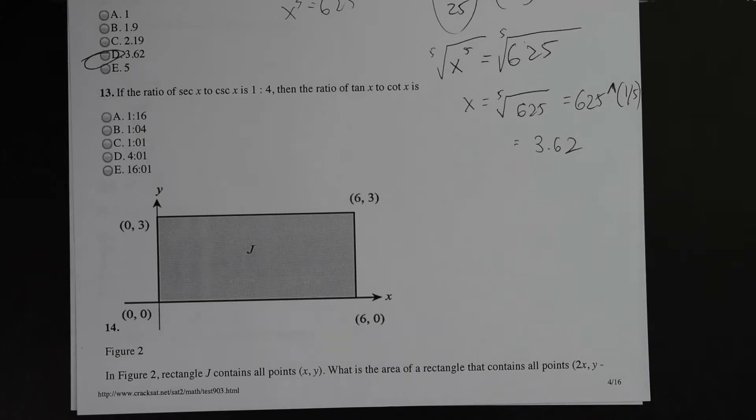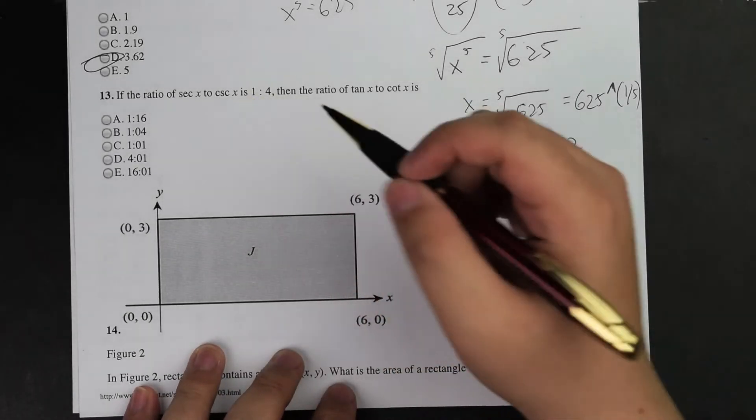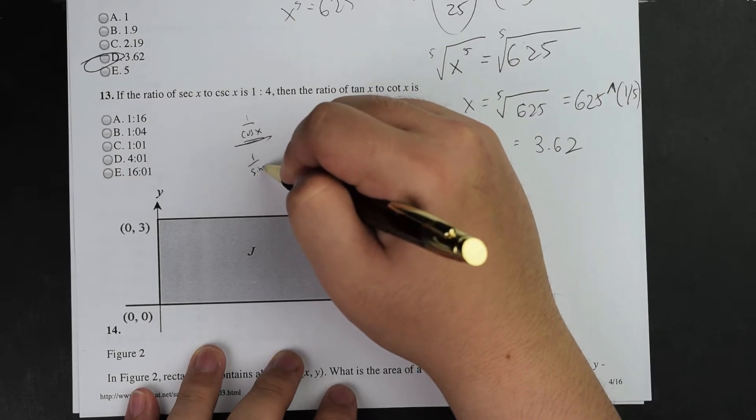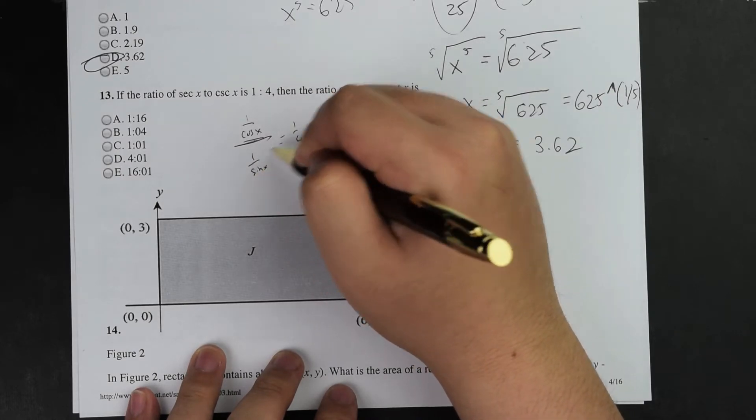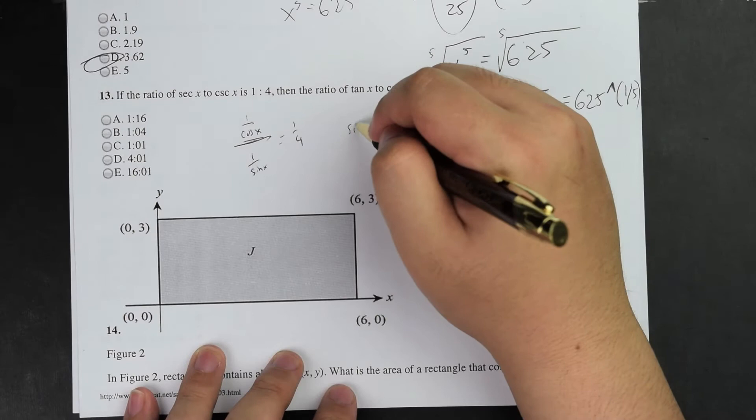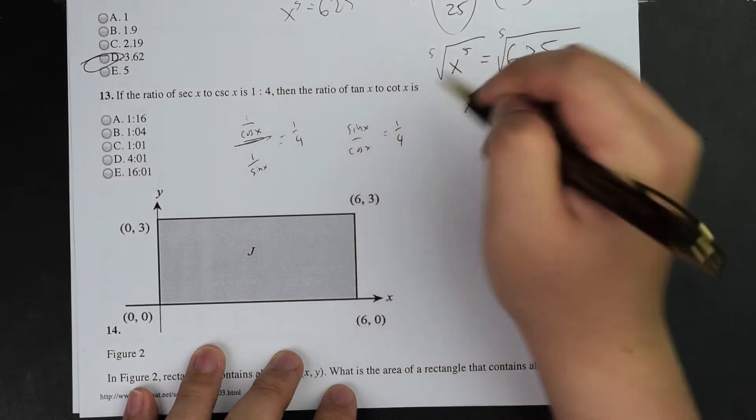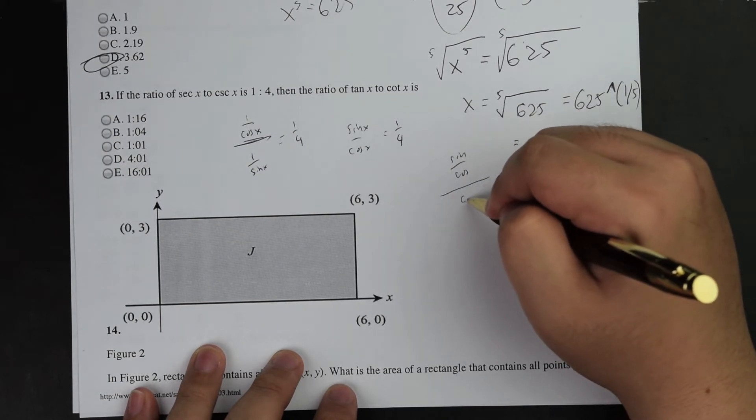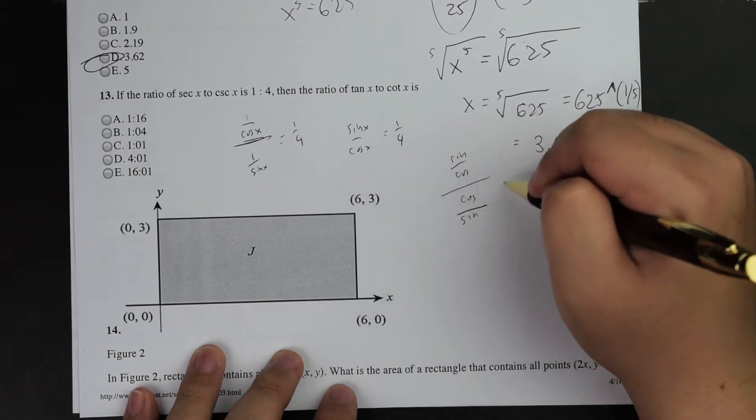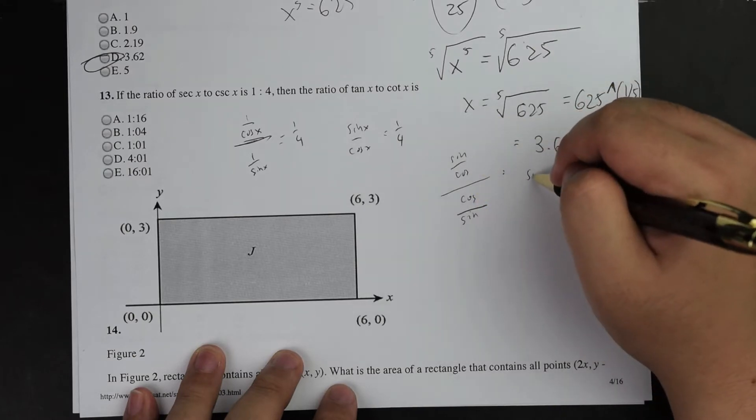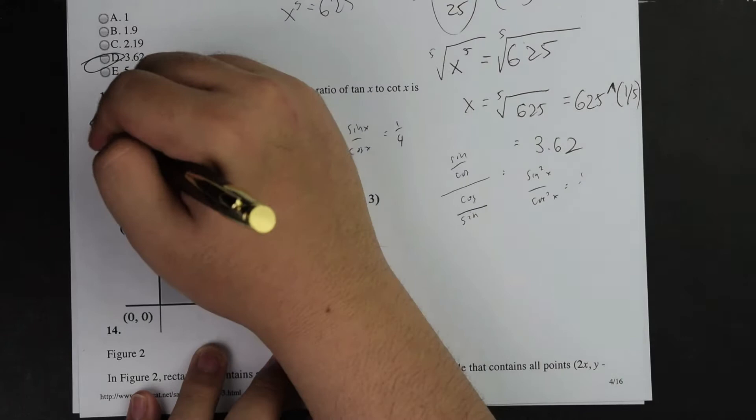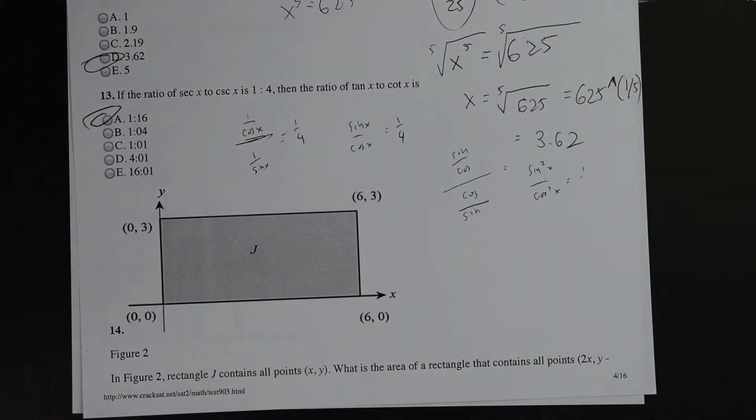So I'm going to go ahead and get started on number 13. Secant x over cosecant x equals 1 over 4. Tangent x over cotangent x equals to 1 over 4. Sine squared x over cosine squared x equals to 1 over 4. So for number 13, my final answer is A and now I'm going to explain to you how to get to this answer.